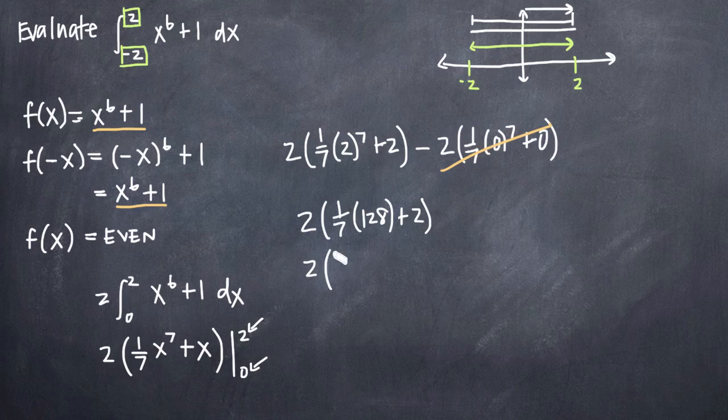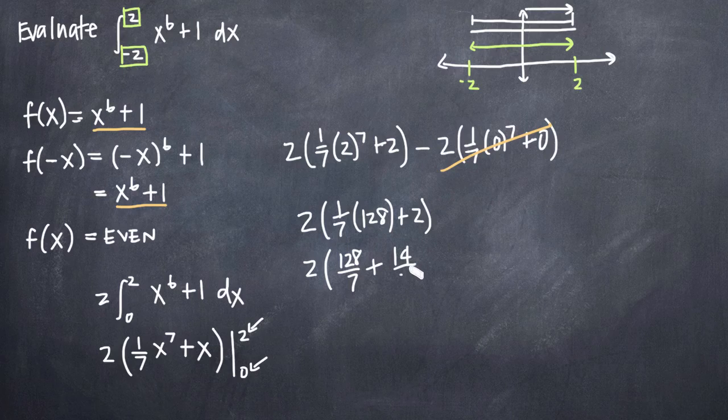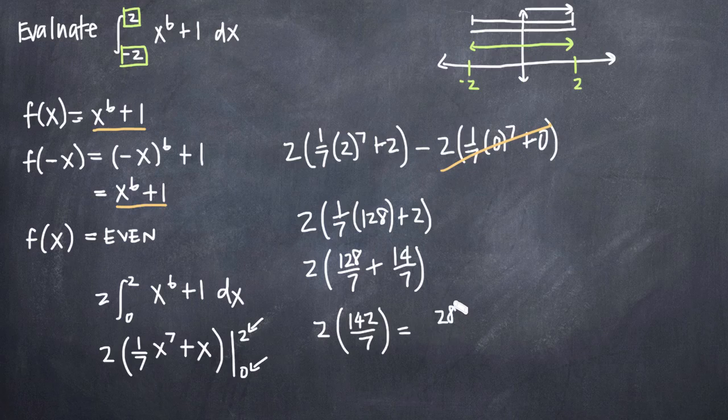Simplifying further, we'll get 2 times 128 over 7 plus, and we can find a common denominator here and call 2 14 over 7. That gives us 2 times 142 over 7, which of course just simplifies to 284 all over 7.